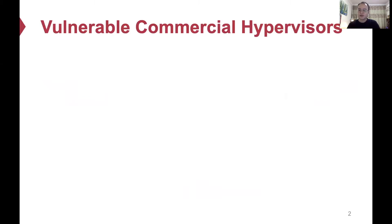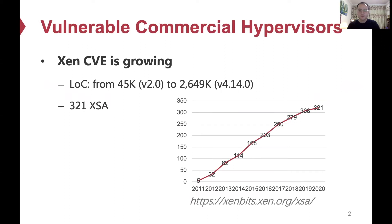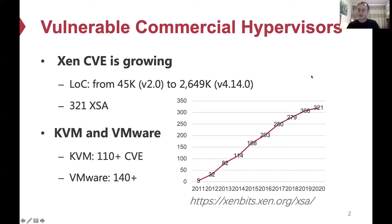Today's commercial hypervisors have more and more bugs. For example, the number of Xen's bugs is increasing over these years — the number is 321. All the vulnerabilities are published on Xen's official website. One of the reasons is that Xen's code size is increasing dramatically. Similarly, other widely used hypervisors, KVM and VMware, also have more than 100 reported vulnerabilities.